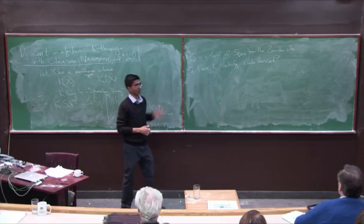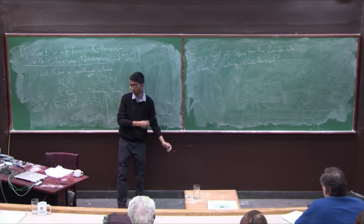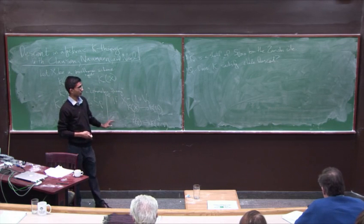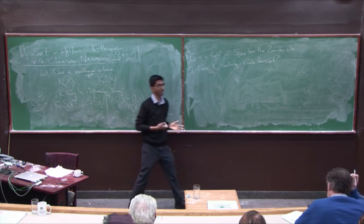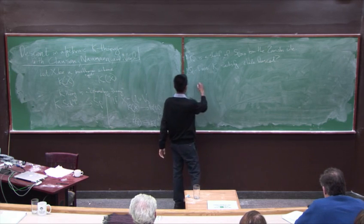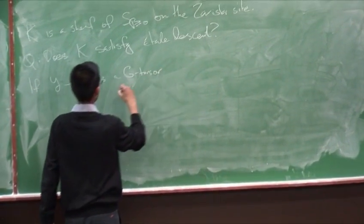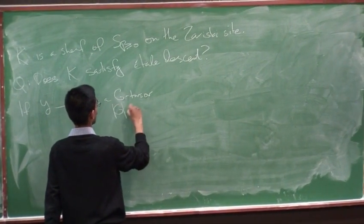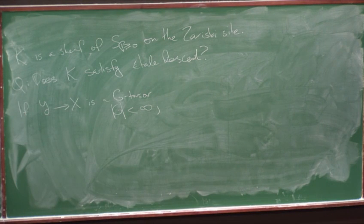OK, so K-theory. So the question is whether K-theory satisfies étale descent. So in general, if you're satisfying Zariski descent, the most important case to check for étale descent is the case of a Galois cover. So if Y to X is a G-torsor, where G is a finite group, then what does... well, this is the prototypical example of an étale morphism, which is not a Zariski, which is not on the Zariski site.